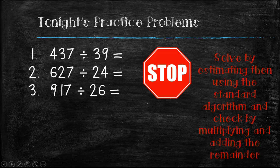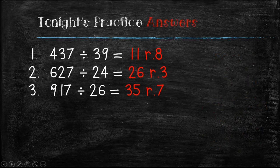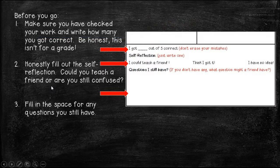Here come the answers in 3, 2, 1. The answer to problem one is 11 remainder 8. The answer to number 2 is 26 remainder 3. And the answer to number 3 is 35 remainder 7. Before you go, make sure you checked your work and wrote how many you got correct — be honest. Also honestly fill out your self-reflection and let me know if you like the standard algorithm better than the doubles-digits method I taught you yesterday. Remember, it doesn't matter which one you use as long as you get the correct answer. Fill in any questions you still have. I hope you have a great night and look forward to seeing you tomorrow.